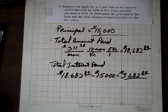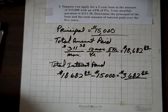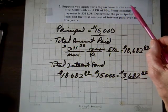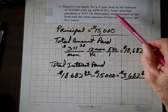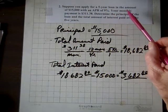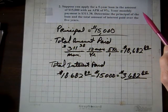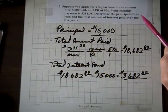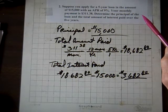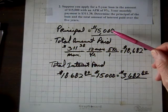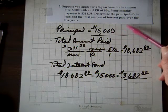So let's deal with question two on the 4D worksheet. It says, suppose you apply for a five-year loan in the amount of $15,000 with an annual percentage rate of 9%, your monthly payment is $311.38. Determine the principal of the loan and the total amount of interest paid over the five years. Well, the principal is $15,000, so we took care of that.